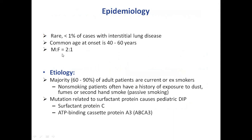In terms of epidemiology, it is common in middle age and more commonly involves males compared to females. However, the overall incidence is very rare — less than one percent of interstitial lung diseases. Regarding etiology, the majority of cases are adult patients with a history of current or ex-smoking. There is also a pediatric population which can be involved, including mutations in surfactant protein C or the ATP-binding cassette protein A3, though these are very rare.